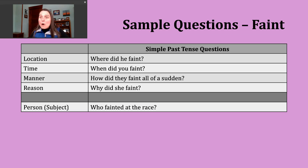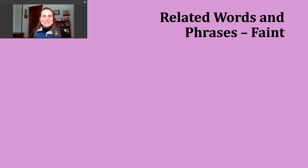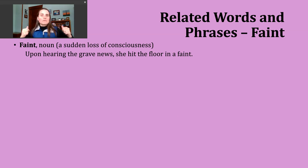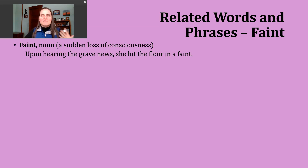Now let's look at some words and phrases related to our verb of the day, faint. The first word is just the noun form — same spelling, same pronunciation. The noun faint refers to a sudden loss of consciousness. An example: upon hearing the grave news, she hit the floor in a faint. We're talking about serious, upsetting news causing a person to lose consciousness. You might have seen something like this in a TV show or movie, as it's used quite frequently in storytelling.